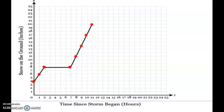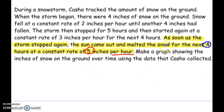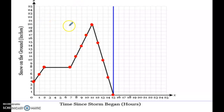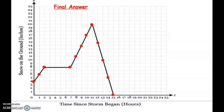Now the next part of the story: as the storm stopped again, the sun came out and melted the snow for the next four hours at a constant rate of five inches per hour. Four hours from now, we go to the right — one, two, three, four — and we're going five inches per hour, but now instead of going up, we're going down. So you go down five and over one, four times. You don't need the blue line — it's just there so you can gauge what's going on. That's the first method and should be the final answer on the first question.